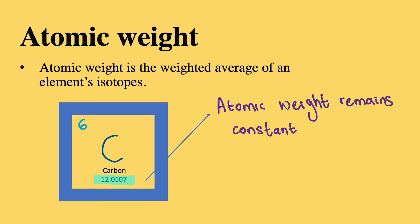This is because atomic weight is the weighted average of all of the element's isotopes. You may have noticed that a decimal number is placed below an element in most periodic tables. This value is the atomic weight of that element.